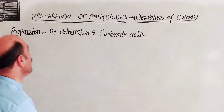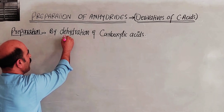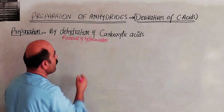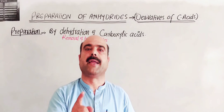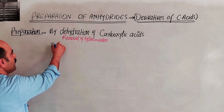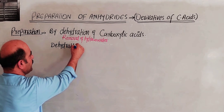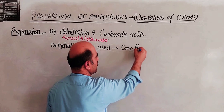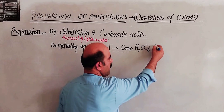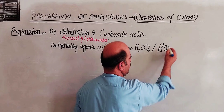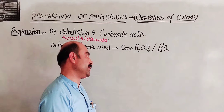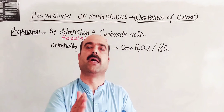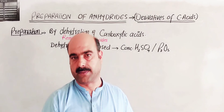Dehydration means a removal of water — removal of H2O from the chemical substances. The dehydrating agents used are: concentrated H2SO4 (concentrated sulfuric acid) at high temperature, and phosphorus pentoxide (P2O5, diphosphorus pentoxide). At high dehydration temperature, water is removed and the water vapor is removed in the reverse direction.